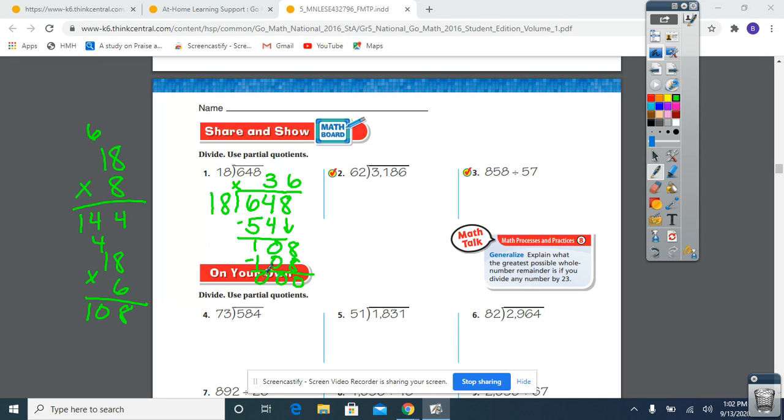Now let's look at number two. Number two is as big as these problems get. Two-digit divisors into four-digit dividends. This is what we want to get really good at. This is what we're probably going to see on our EOG. But it is the same exact process. How many times does 62 go into 31? 62 is bigger than 31, so we're going to move over another digit. How many times does 62 go into 318?